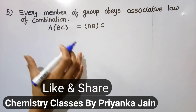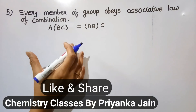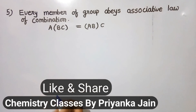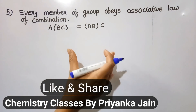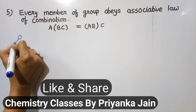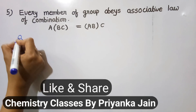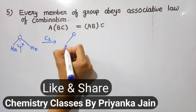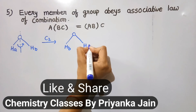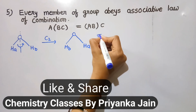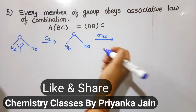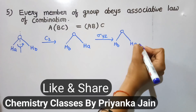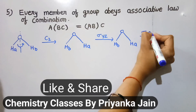The fifth postulate is: every member of the group obeys the associative law of combination — just as in mathematics. If we apply (BC) first and then A, or apply A(BC), or apply (AB) first and then C, in all cases we get the same product. For example with water: applying C2 gives the swapped structure, then applying σ(yz) leaves it the same, then applying σ(xz) bisects the molecule to give a further structure.